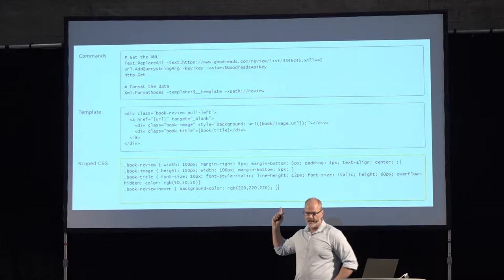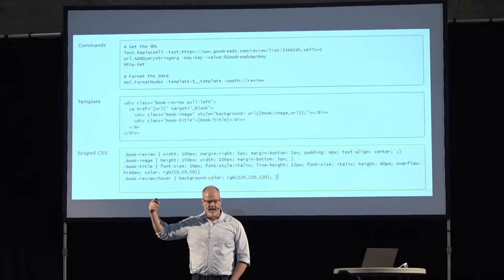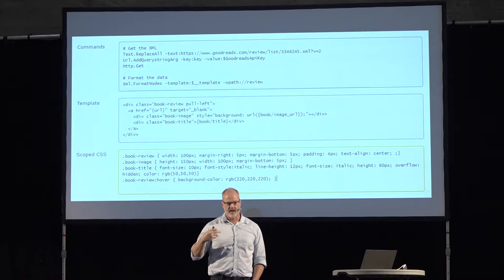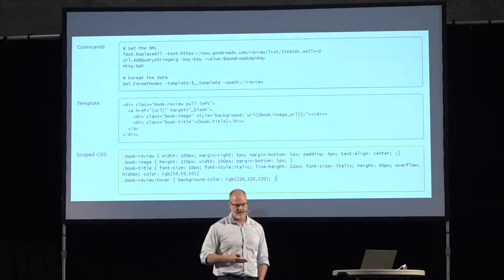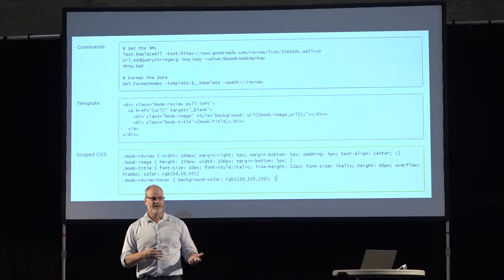Just to give you a look at the commands at the top — in this case we have three or four commands. We're taking a URL to the Goodreads API, adding a query string for a Goodreads API key, making the GET call, and then down the bottom we have a command to format the nodes. The template is in the middle. We're creating some HTML, and there's some scoped CSS — the scoped keyword was actually deprecated, so I'm dumping this in an inline style tag.